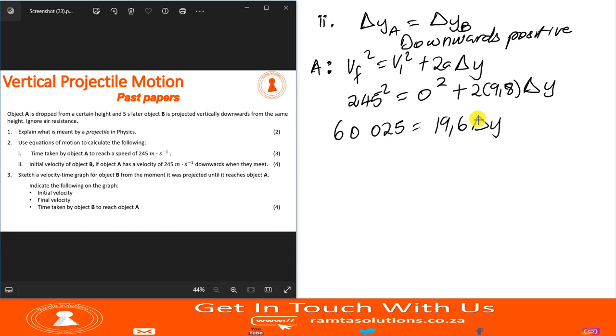So if I divide by 19.6, what do we get? We get delta Y equals 3062.50 meters. So these two objects are meeting when object A has moved about 3062.50 meters.